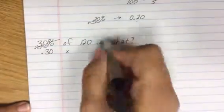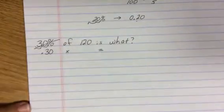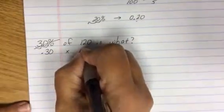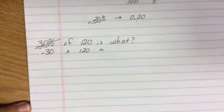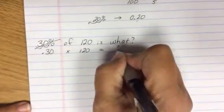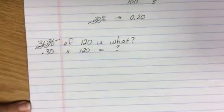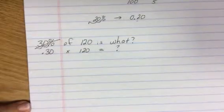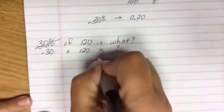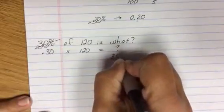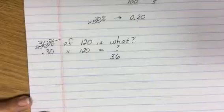Whenever I see the word 'is,' it's an equals. So 0.30 times 120 is what? What is my unknown, my variable? So I have something I can work with. 0.30 times 120 tells me 36.